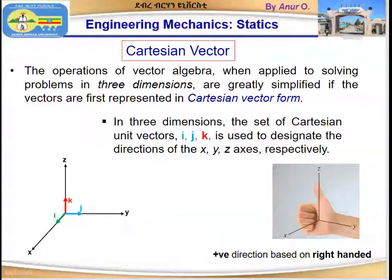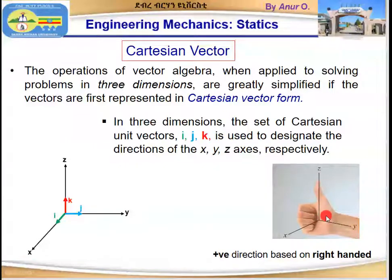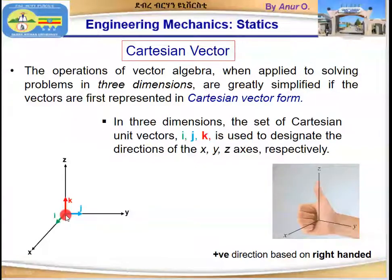In a Cartesian vector form we use a right-handed coordinate system. This means the thumb of the right hand points toward the positive z direction, as we can see here. When the vector i is crossed with vector j, it gives a positive third vector which is perpendicular to i and j — that is k. This k is considered positive if we cross i to vector j, and this can be represented by the right-hand rule.